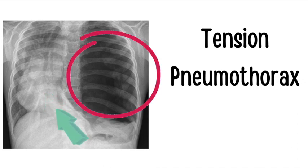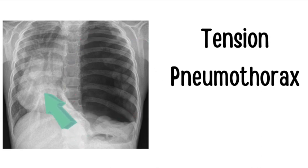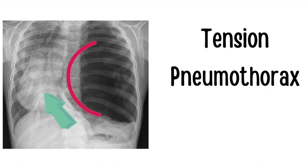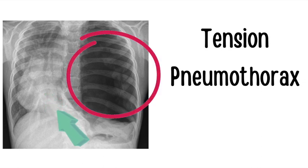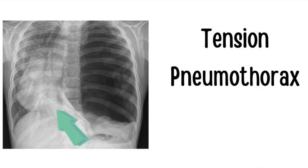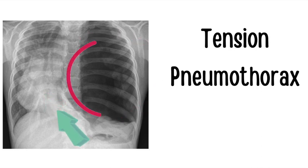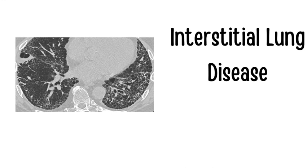Another way examiners test pneumothorax is presenting a tall, very slim male who suddenly develops difficulty breathing — that patient developed a spontaneous pneumothorax. Tall slender males are more likely to develop one. In this image, the arrow points to the shift of the mediastinum, while the red circle shows where you would find hyper-resonance or decreased breath sounds on exam.